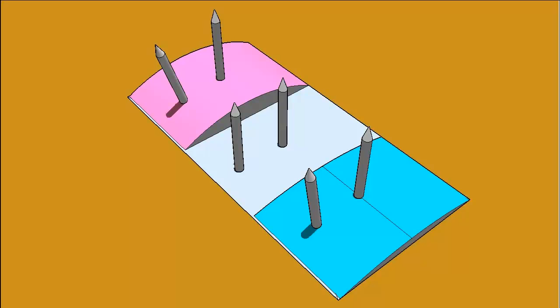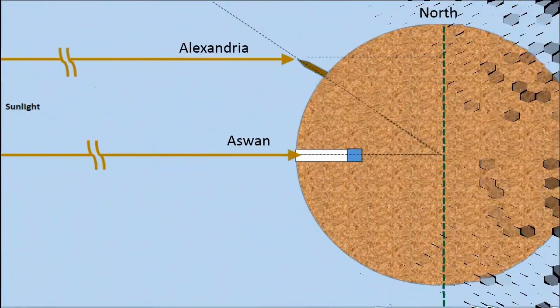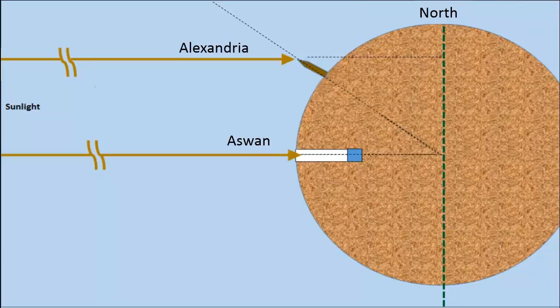So in Eratosthenes' mind, the Aswan and Alexandria shadow situation was telling him something about the curvature of the earth itself. This was a key clue for Eratosthenes, and he started drawing models of the sun, the well, and the earth, to see what's up with that. He put together the following model, which is key to understanding his famous experiment.